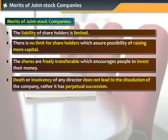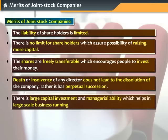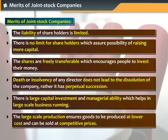In public joint stock companies, the debt or insolvency of any director does not lead to the dissolution of the company. Rather, it has perpetual succession. There is a large capital investment and managerial ability, which helps in large-scale business running. The large-scale production ensures goods to be produced at lower cost and to be sold at competitive prices.